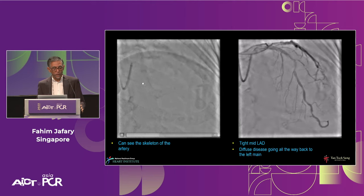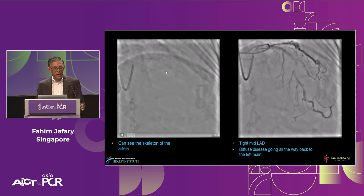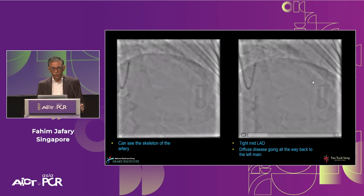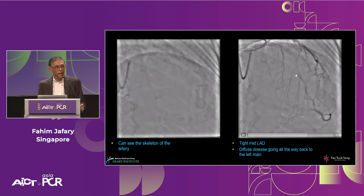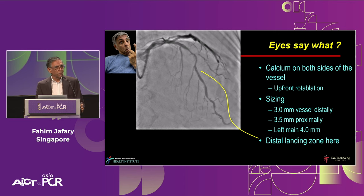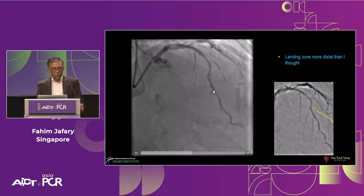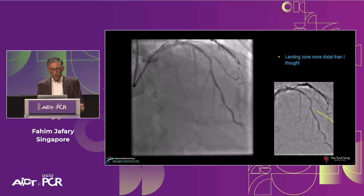Looking at a case: on the left you see a heavily calcified vessel. On the right with contrast, there's a tight mid-LAD lesion and diffuse disease going back almost to the left main. My eyes tell me there's calcium on both sides and upfront rotational ablation is the way to go. Sizing: approximately 3.0 distally, 3.5 mid-vessel, and 4.0 at the left main. With IVUS, however, it turns out the landing zone where the vessel is normal is actually well beyond what the eyes suggested.